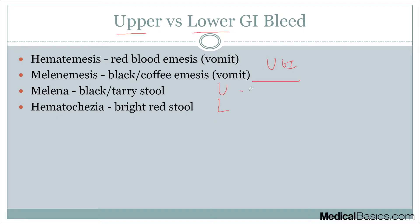The caveat to both of these is that they can be either or. These are what we typically think of, but you have to expand your differential because melena can be caused by a slow lower GI bleed, and hematochezia can be caused by a very brisk or fast upper GI bleed. So there's definitely a preference for each of these terms, but it's not an absolute — you always have to keep your differential pretty wide.